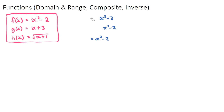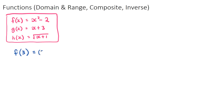Let's have a look at our three functions. We're going to find the output if we give the input some numbers. If you ever see f of a number — for example, f of three — you need to find the function f, which is x squared minus two, and substitute three in for x. So we get three squared minus two, which is nine minus two, which is seven. So if the input variable is three, the output will be seven.